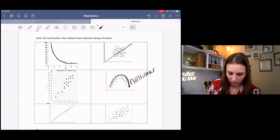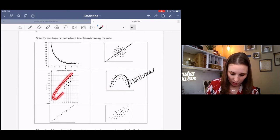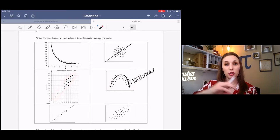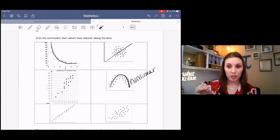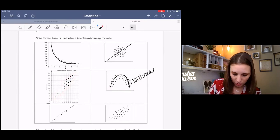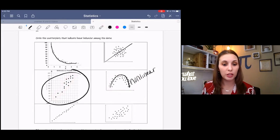Now, this doesn't follow an exact line. But if we were to draw a circle around the data, it does have a linear trend. And that's what we're really looking for, a trend, an overall trend. So this one is good for a linear pattern, a linear trend.